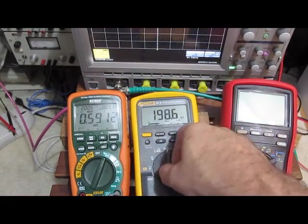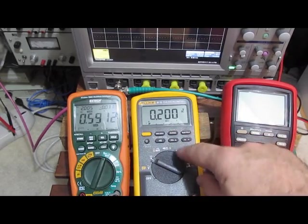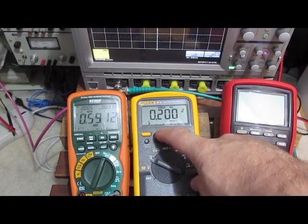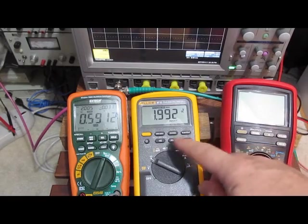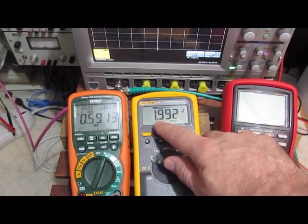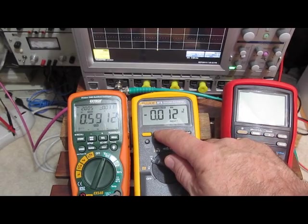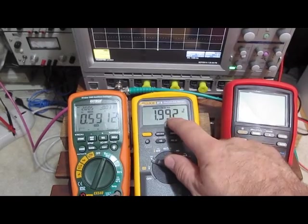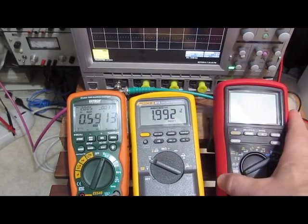Before when I ran the Fluke, again, I didn't realize it had that function, so I had just done a min-max, and of course it can't pick it. However, we do this peak hold, and sure enough, you can see 1.992, and again, 0 volts. So at least at 2.5 milliseconds, this meter has no problem picking that up.